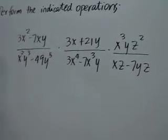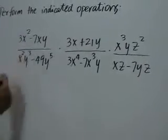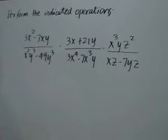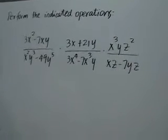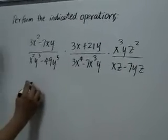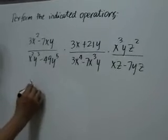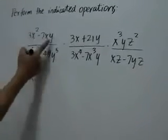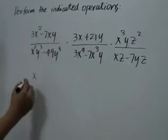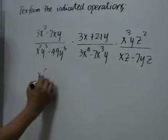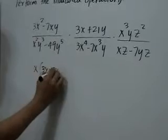For the first fraction, in the numerator, 3x squared minus 7xy, a common factor is x. If you factor x from 3x squared minus 7xy, you'll have x times quantity 3x minus 7y.